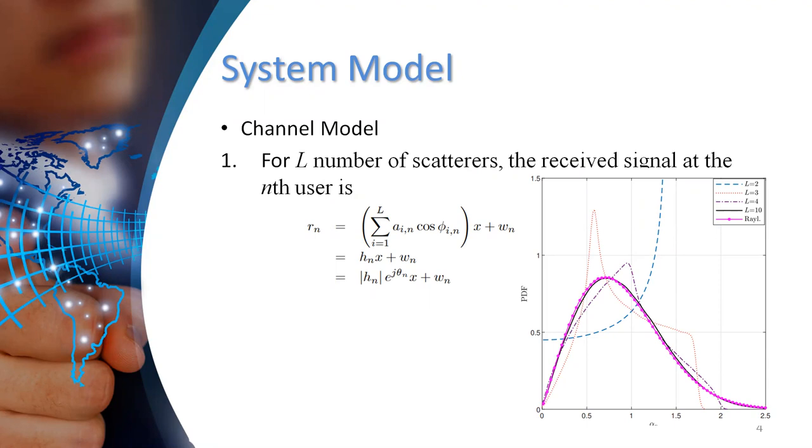In hyper-Rayleigh fading channels, let's assume that we have a number of scatterers in the environment. Then the received signal at the nth user can be displayed as this equation, which contains a sum of all reflected signals.